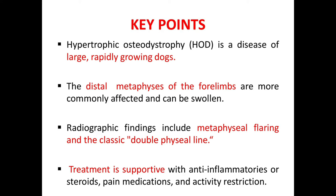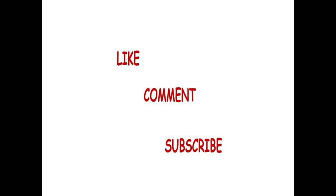Key points: Hypertrophic osteodystrophy is a disease of large, rapidly growing dogs. The distal metaphysis of the four limbs is more commonly affected and can be swollen. Radiographic findings show a classic double physis line. Treatment is supportive, with anti-inflammatory steroids, pain medications, and activity restriction.